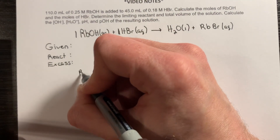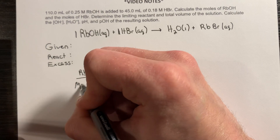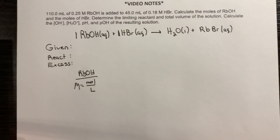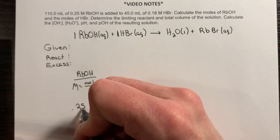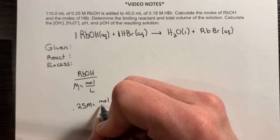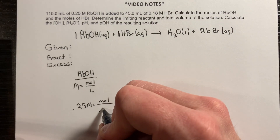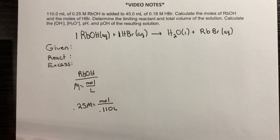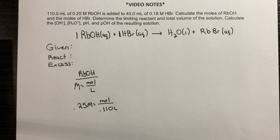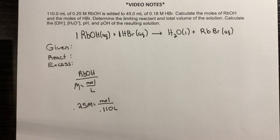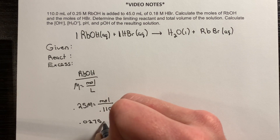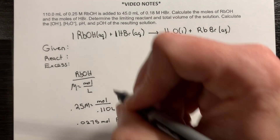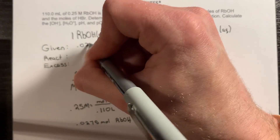Starting with the rubidium hydroxide solution: molarity equals moles over liters. Drawing on the problem's information, 0.25 molar equals moles of RbOH over 0.110 liters. Dividing by 1,000 to convert milliliters to liters, when I isolate for moles I get 0.0275 moles. I'll plug that into my table right away.